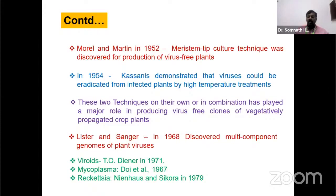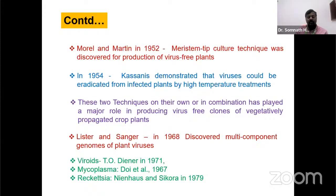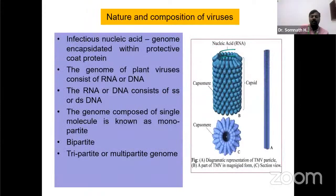These two techniques — meristem tip culture and heat therapy — alone or in combination have played a major role in producing virus-free clones of vegetatively propagated crops. In 1968, multi-component genomes of plant viruses were discovered, showing that viruses are composed of different components or segments of nucleic acid. Viroid was discovered by Diener in 1971, mycoplasma by Doi in 1967, and rickettsia in 1979.